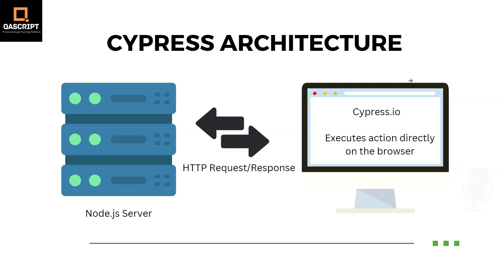Cypress also operates at the network layer by reading or altering web traffic on the fly. This not only enables Cypress to modify everything coming in and out of the browser, but it can also change code that might interfere with its ability to automate the browser. So this is a very high level overview of the Cypress architecture.